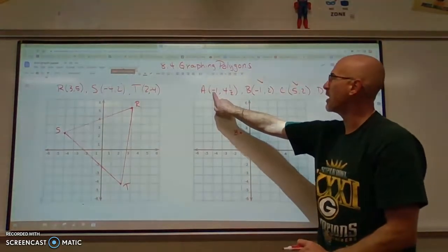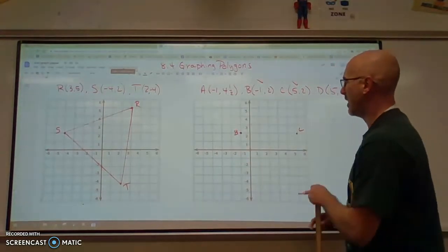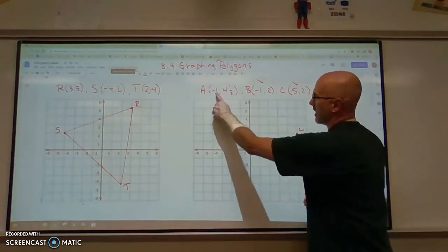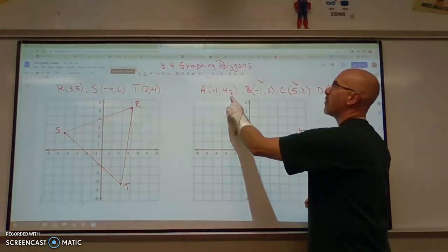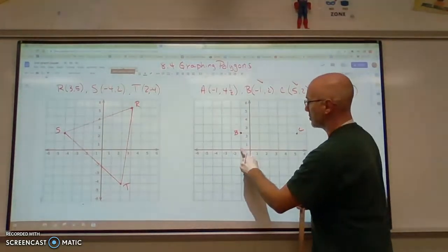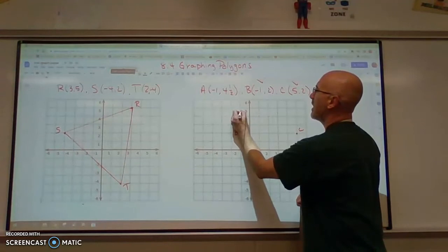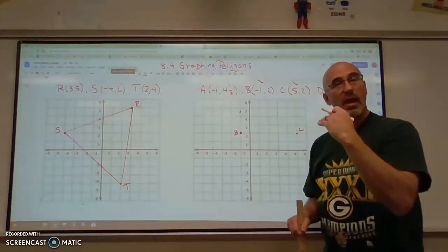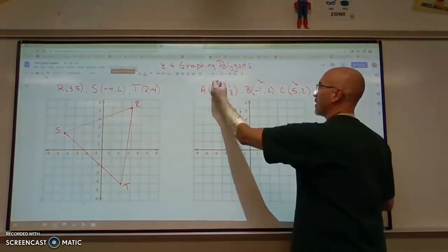Now let's go back to point A. We're at negative 1, 4 and a half. So we're going to go negative 1 in the x direction and then 4 and a half in the y direction. So 1, 2, 3, 4 and a half. Just go up half of a unit, half of a box. So there is point A.